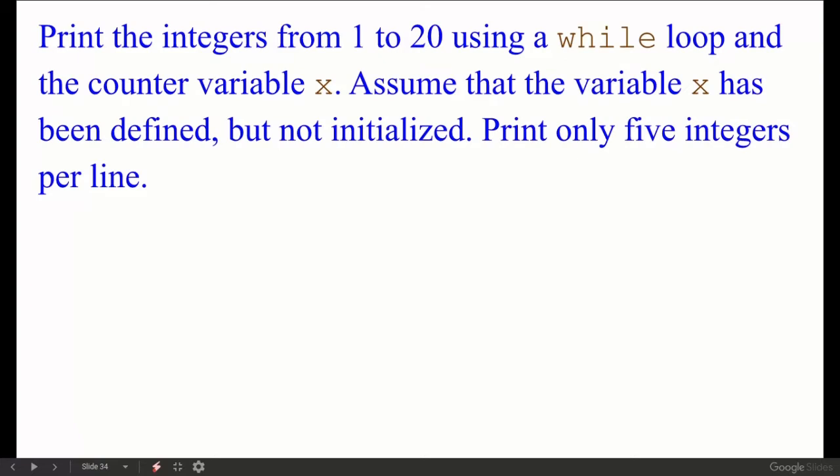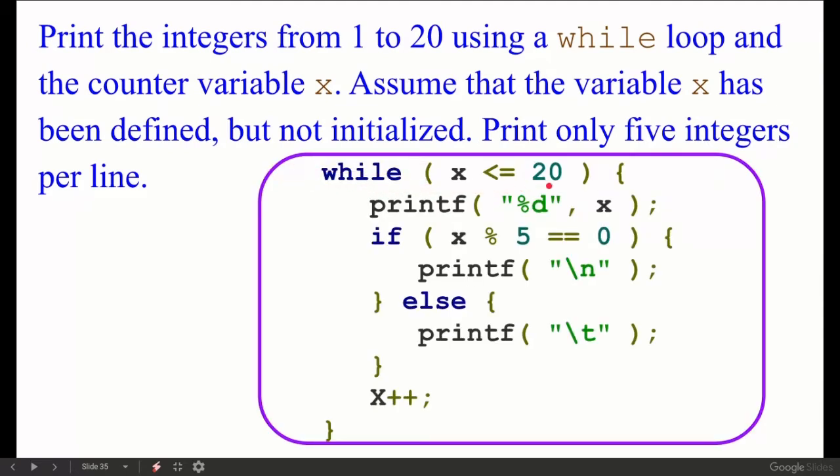1, 2, 3, 4, 5, then 6, 7, 8, 9, 10. So this is the answer. We have a while statement, x less than or equal to 20. We have defined and initialized x equal to 0. We initialize x equal to 1. Then we have condition less than or equal to 20. Then we have printf to print x, then space. We have a condition, if statement. We have modulo 5, then we have new line print, else we have space print.